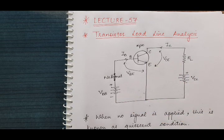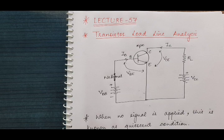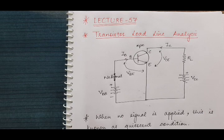Second thing is for the amplification purposes, we have already studied that the transistor has three operating regions: active region, saturation region, and cutoff region. But transistor works as an amplifier only when it is operated in the active region. So for the transistor to work in the active region, we need proper biasing of the transistor.